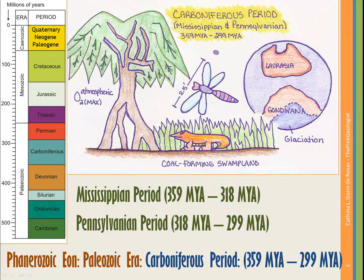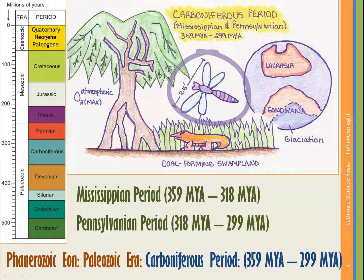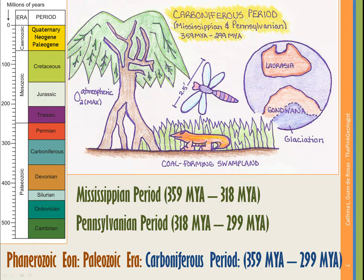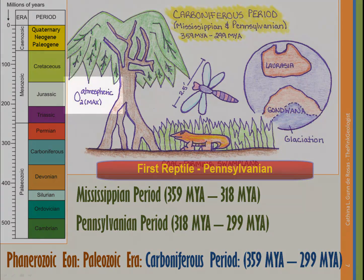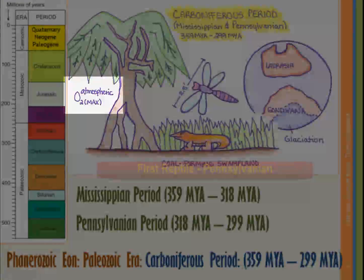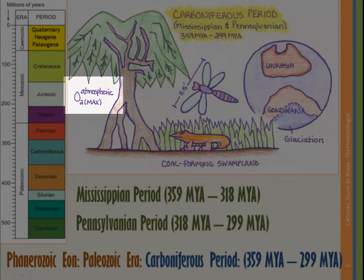In this time you have huge winged insects — very dragonfly-like, with wingspans of up to two and a half feet. You also see the first reptiles, appearing in the Pennsylvanian period. At this point in history, the atmospheric oxygen level is the highest it has ever been.